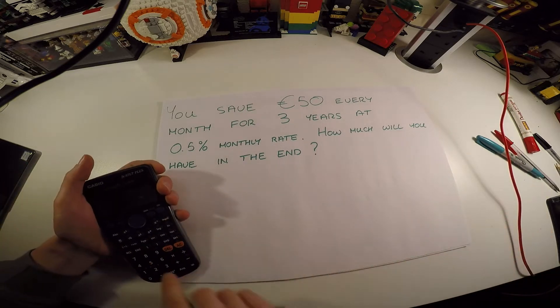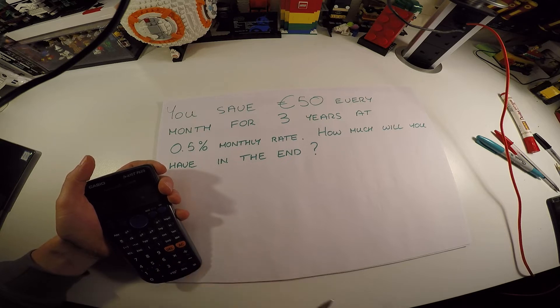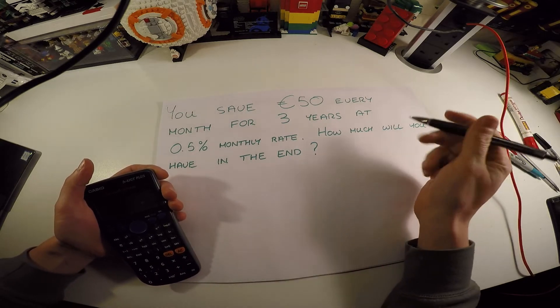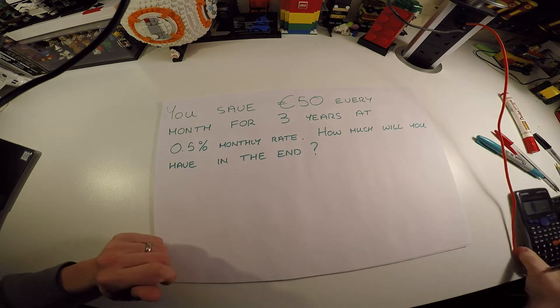If you were just putting 50 euros into an account with no interest rate for 36 months, we would multiply 50 by 36 and get 1800. So we know our answer should be a little bit bigger than that because of interest being added.